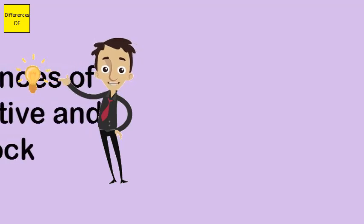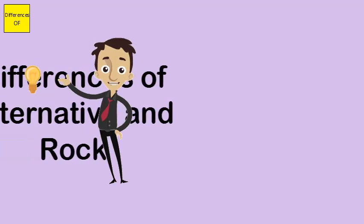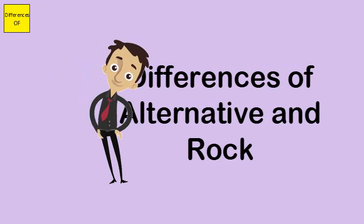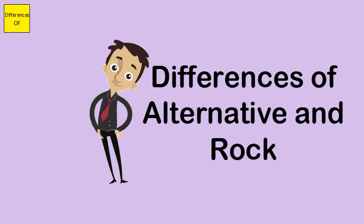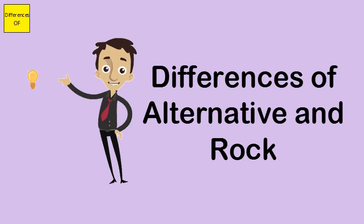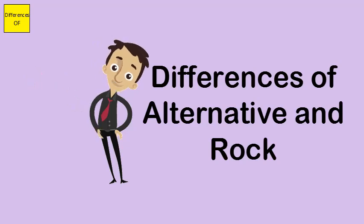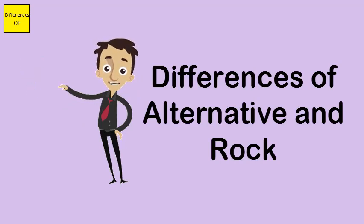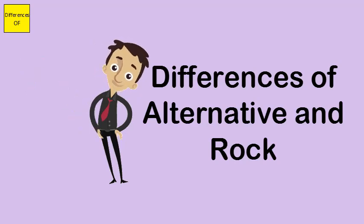Differences between rock and alternative: Rock can be called a classical form of music, while alternative is only a variation of this classical form. Rock music became famous in the 1960s, and it was only in the 1980s that alternative gained popularity.